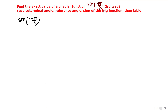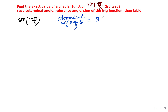The third way uses coterminal angle, reference angle, sign of the trig function, and then the table. We'll keep it in radian measure. Remember the formula: the coterminal angle of angle θ equals θ plus 2nπ, where n is an integer.